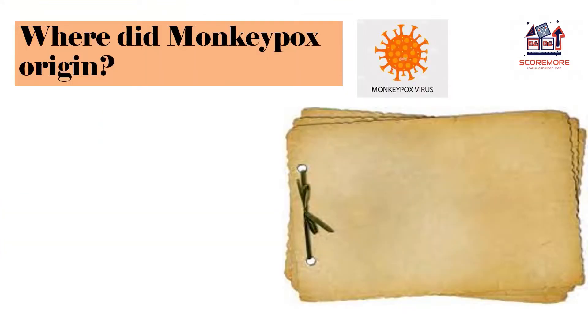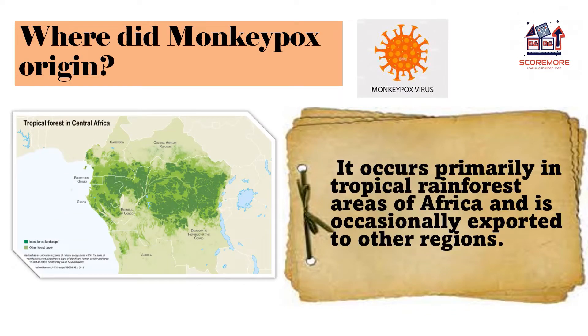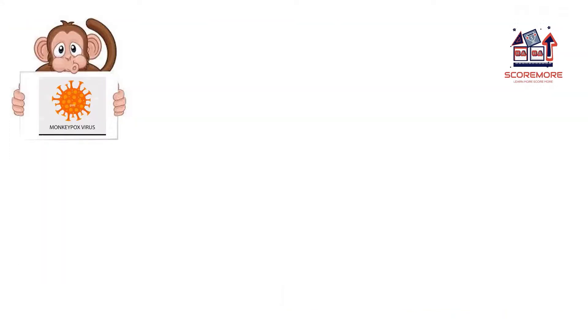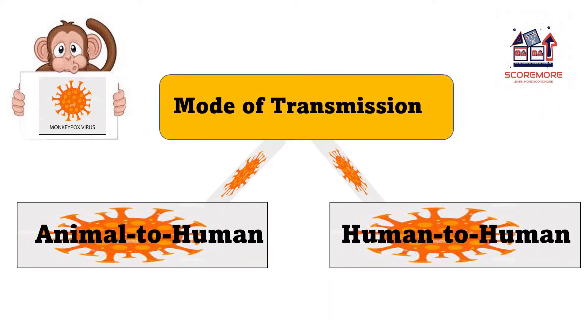So from where did monkeypox start? It occurs primarily in tropical rainforest areas of Africa and is occasionally exported to other regions. So how is the monkeypox virus transmitted? There are two ways: type number one, animal to human, and type number two, human to human.